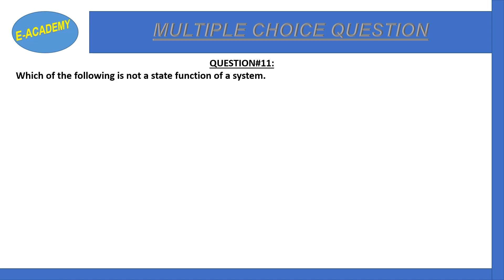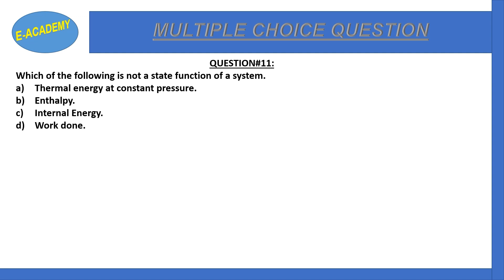Question number eleven: Which of the following is not a state function of a system — pressure, enthalpy, internal energy, or work done? The correct option is D: work done. A state function depends only on initial and final states, independent of the path followed. Work done is dependent on the path taken, so it is not a state function.